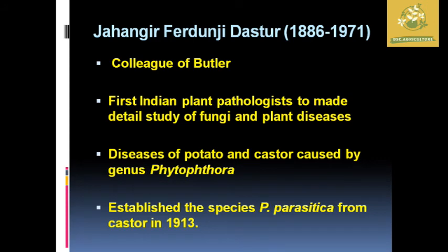Jehangir Furdoonji Dastur was Butler's colleague and was the first Indian plant pathologist to make a detailed study of fungi and plant diseases. He described diseases of potato and castor caused by the genus Phytophthora, and established the species P. parasitica from castor in 1913.